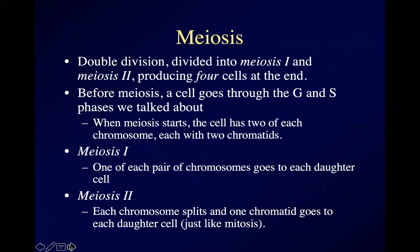Here's what you basically need to know: meiosis is actually a double division. You start with one cell, and it divides, and then it divides again. Right now, guys, in your seminiferous tubules in your testes, you've got cells called spermatogonia. You make more spermatogonia by mitosis, but every day some of your spermatogonia switch over to meiosis, and each one divides twice — producing four sperm cells. Divide into two, divide again, and the two become four.